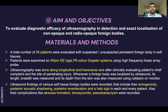In the study, a total of 35 patients were evaluated with suspected and unsuspected foreign body in soft tissue. They were examined on a Wipro GE Logic P9 color Doppler system using a high frequency linear array probe. Ultrasonography was done along longitudinal and transverse axis after clinically evaluating the patient's chief complaint and the site of penetrating injury. Whenever a foreign body was localized by ultrasound, its length, breadth, and depth from the skin were measured using calipers on monitor.